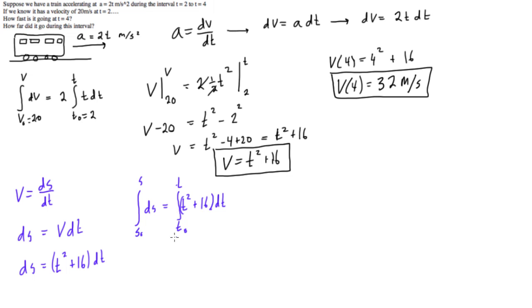And we have s naught to s and t naught to t. So what we're going to do, actually, if we define s naught as 0, and just forget about all of the distance it traveled up until the point t equals 2, then that's going to make our lives a lot easier. So we're going to do that. And then we will only be considering the distance it travels after t equals 2. So we'll change that to 0, and also remember t naught, this is equal to 2.